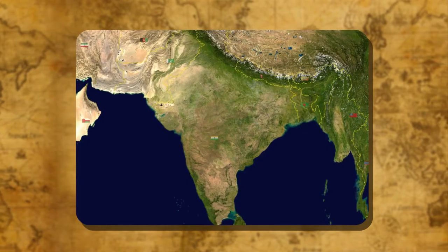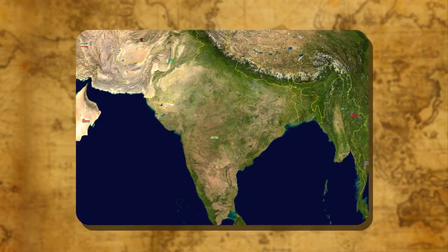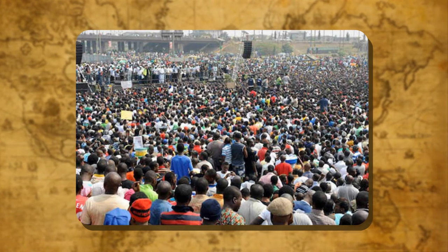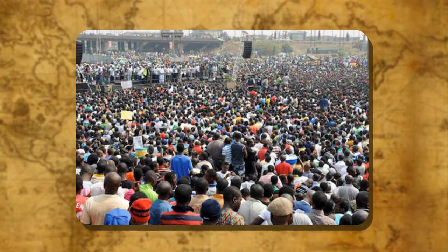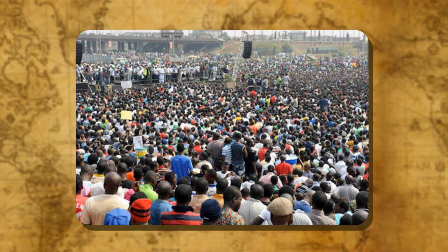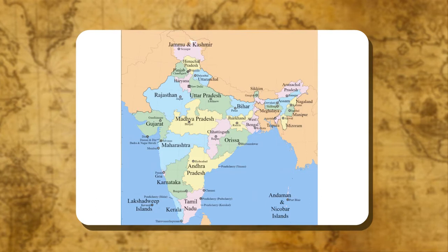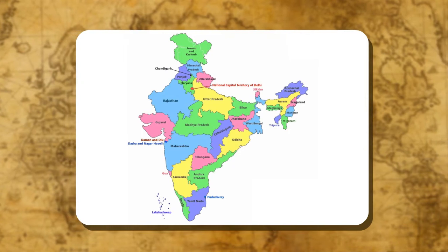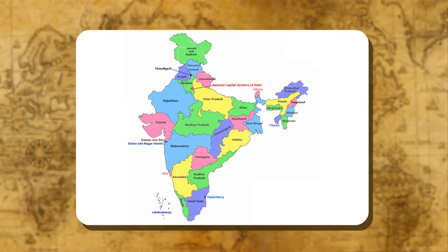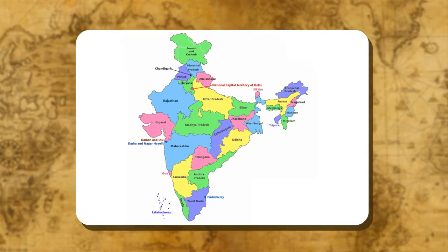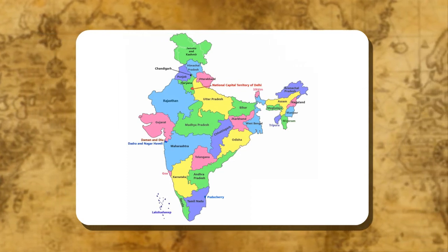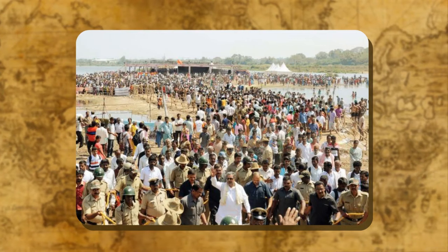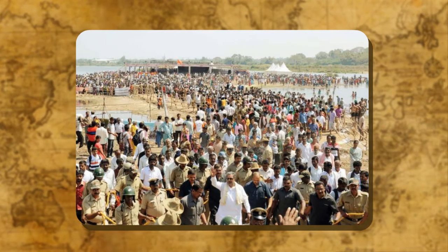India covers an area of 32,87,262 square kilometres with a large population of more than 100 crore. It is not possible to administer such a big country from one place, so it has been divided into 29 states and 7 union territories. The states have been further divided into districts for providing better administration and better services to the people. There is no fixed size or population for a district; the districts have evolved depending upon the needs and requirements of a particular area.